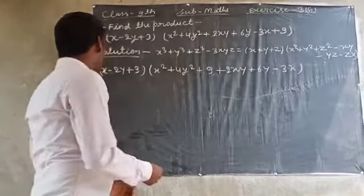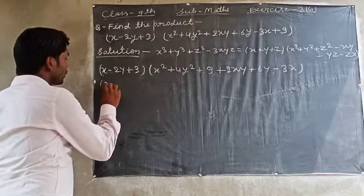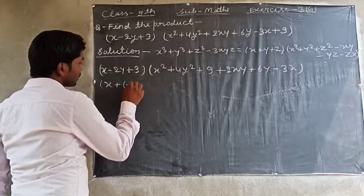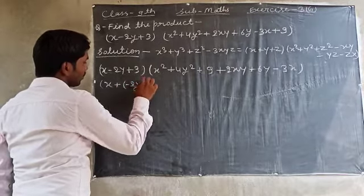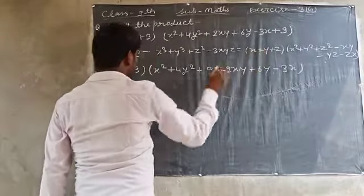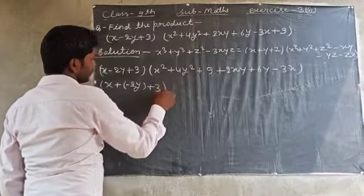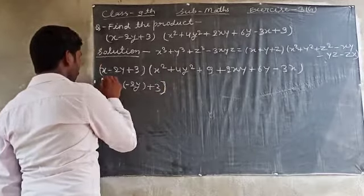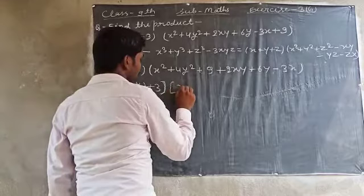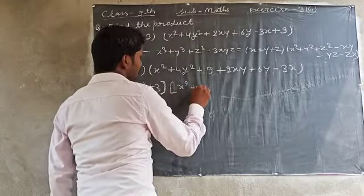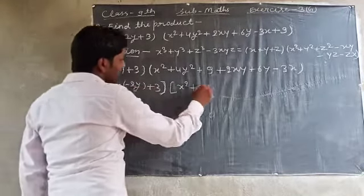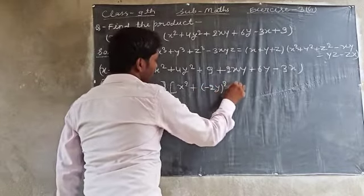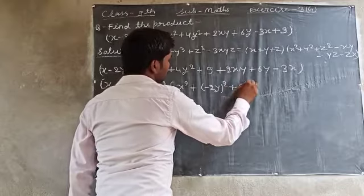We now convert it: in place of x we put x, in place of y we put (−2y), and in place of z we put 3. So the first bracket becomes (x + (−2y) + 3), and in the second bracket we have x², then (−2y)², and 3² — which is the square of each substituted value.